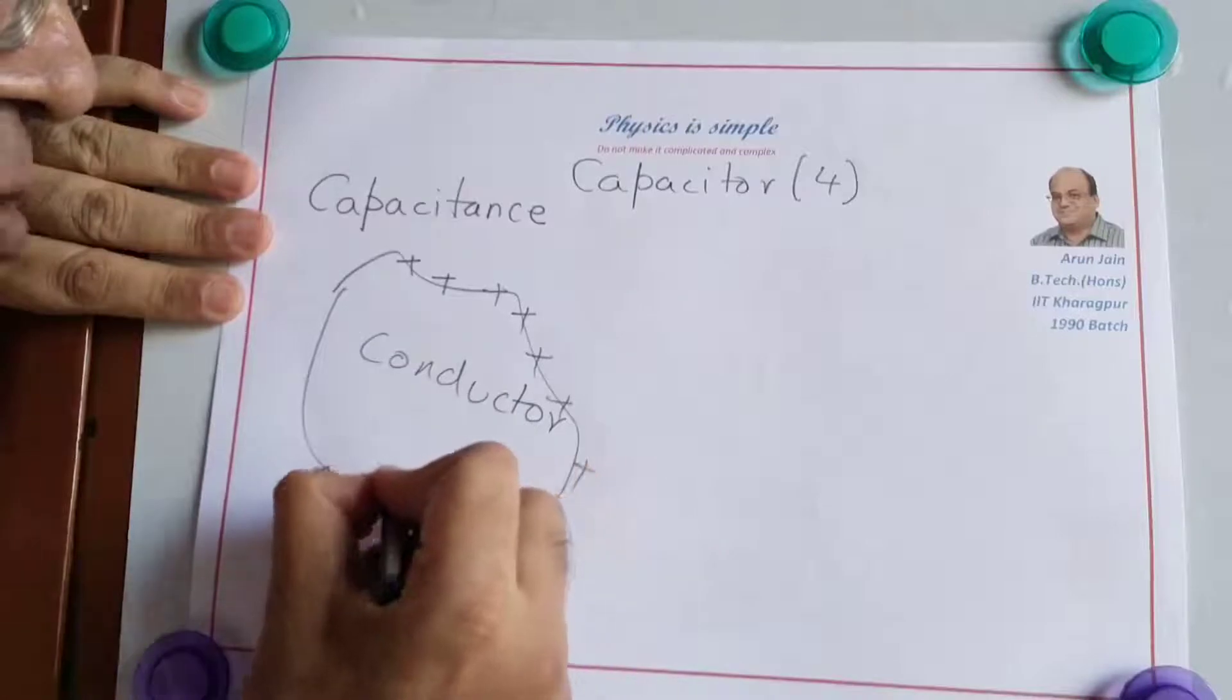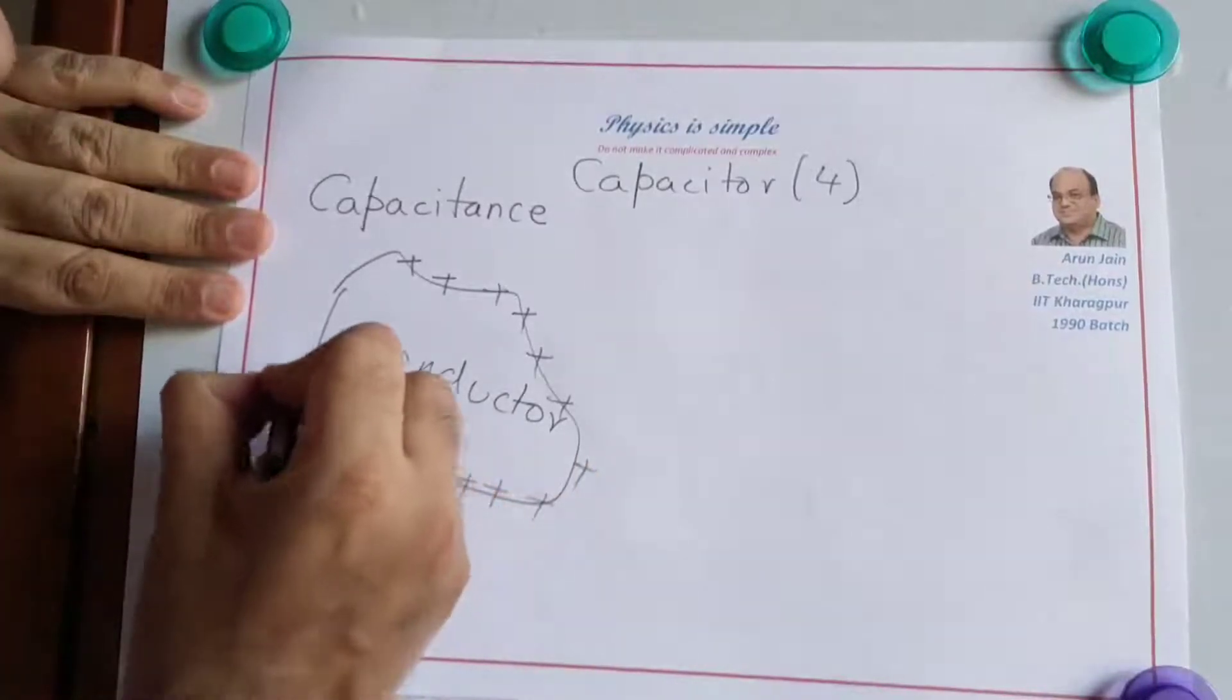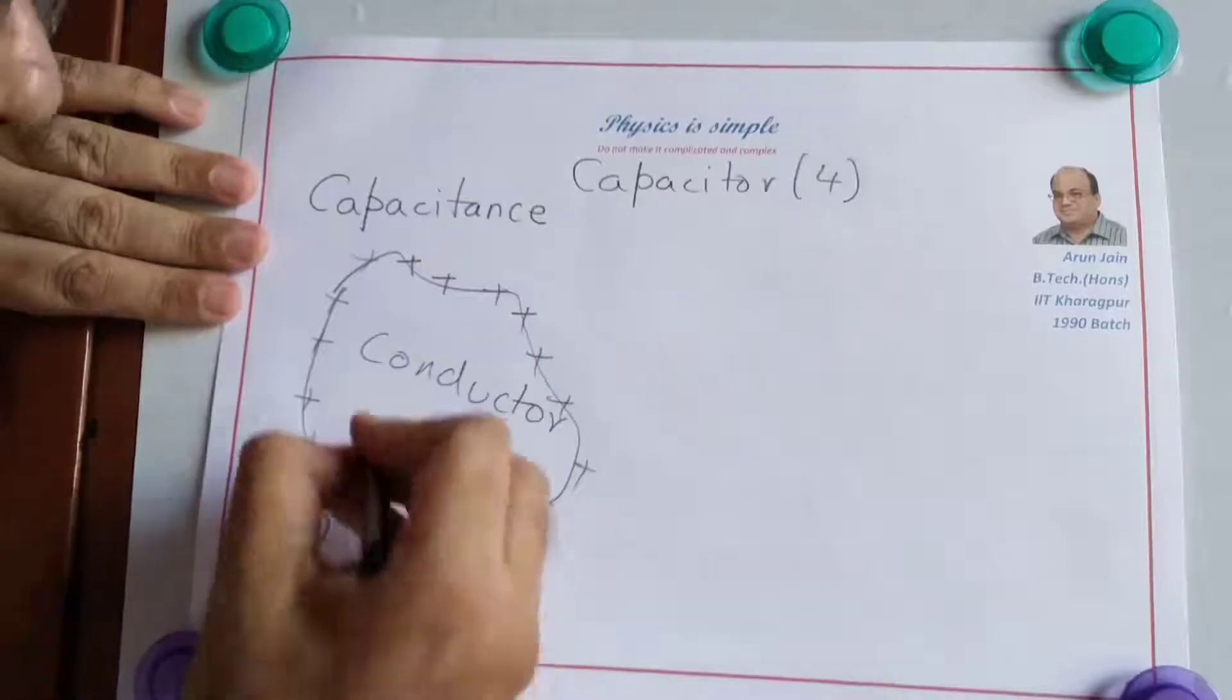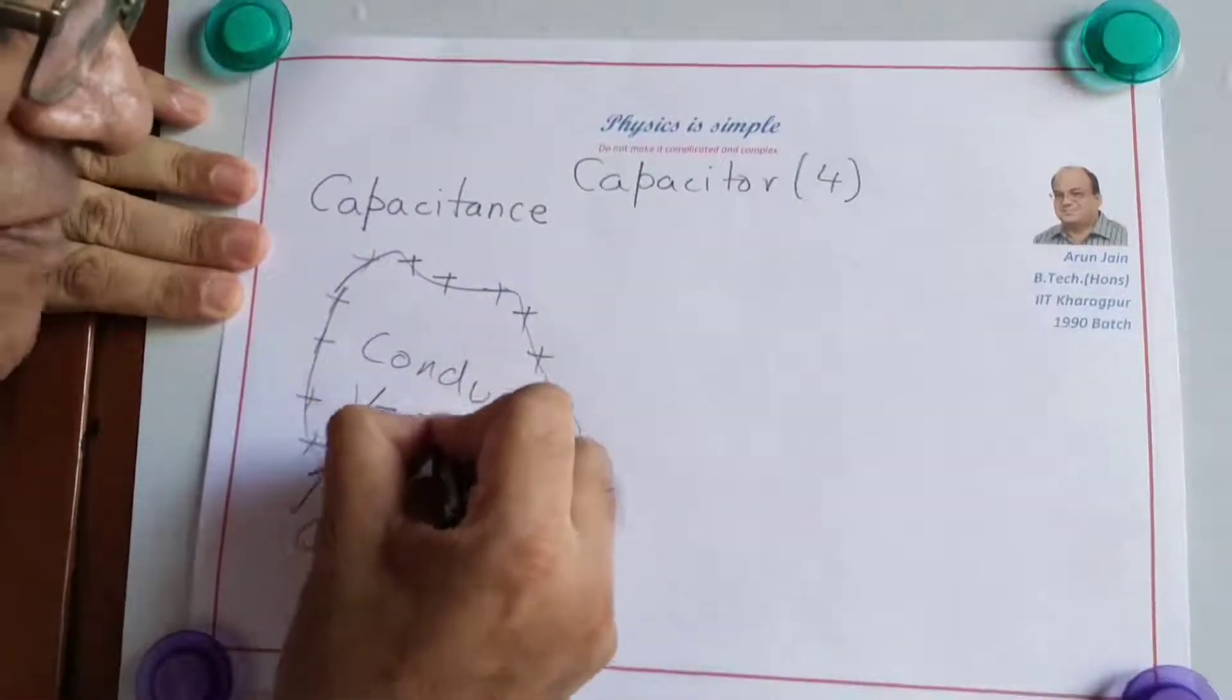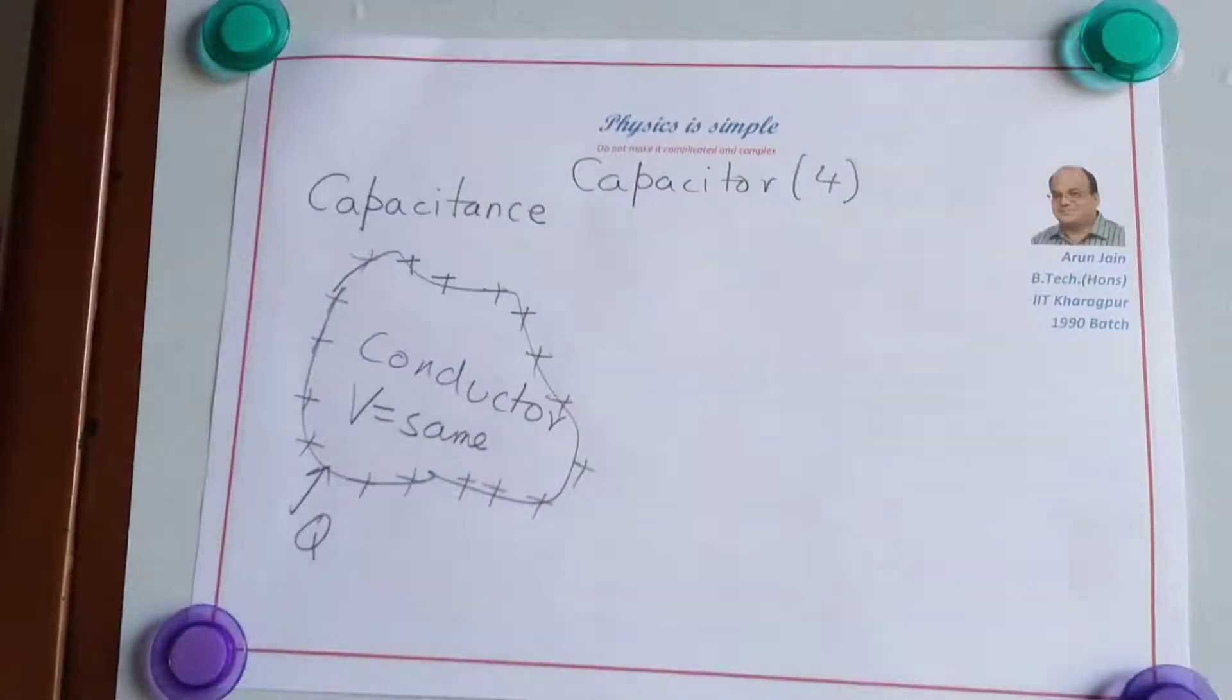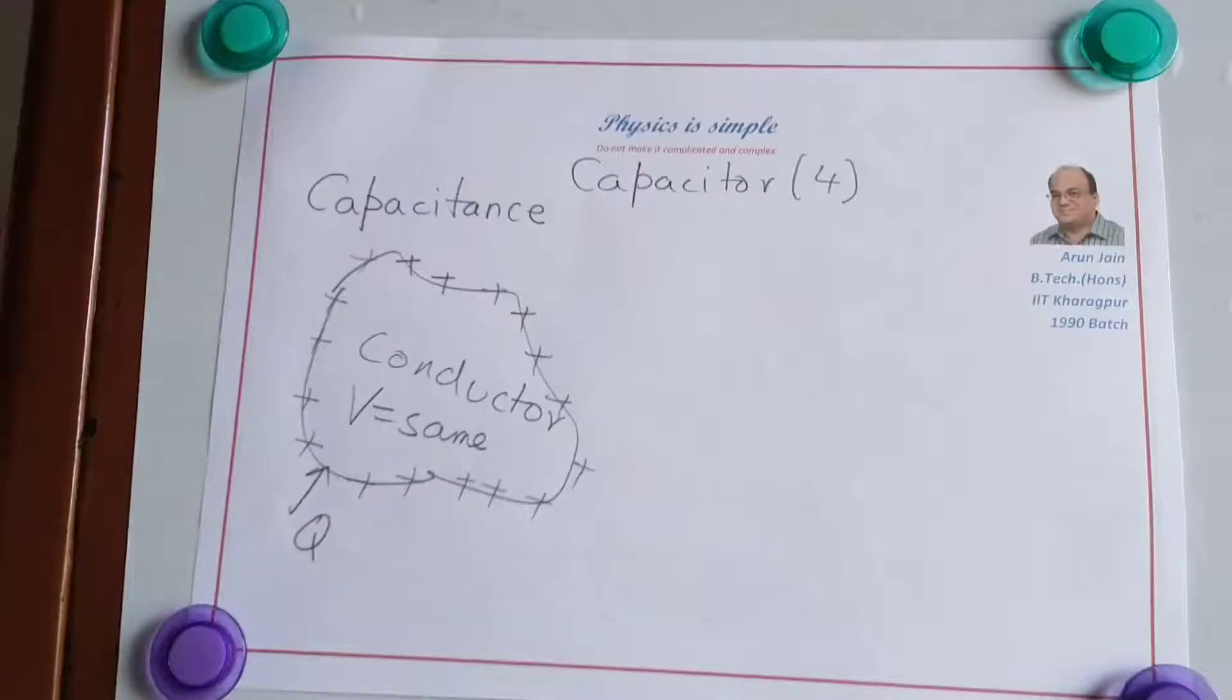It distributes in such a way that this conductor becomes an equipotential. V is same everywhere. So the charge goes to the outer surface and distributes such that the potential is same everywhere.